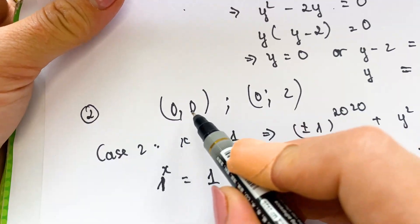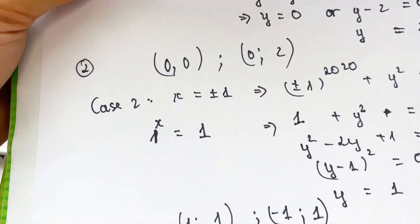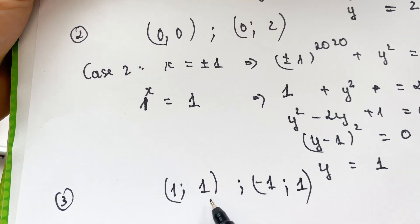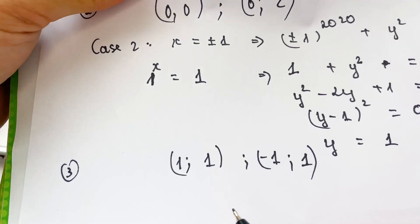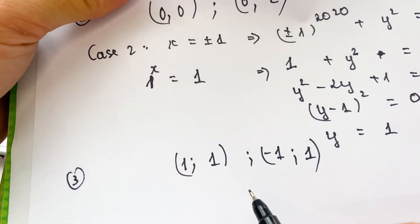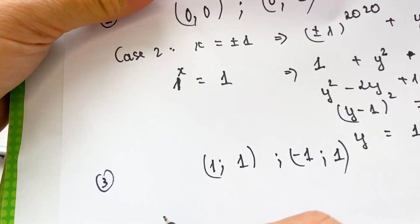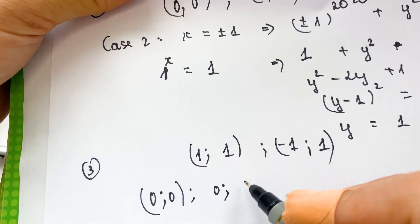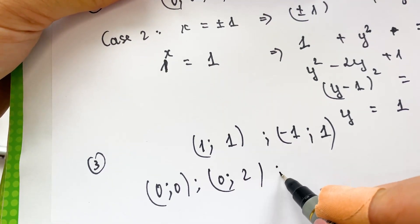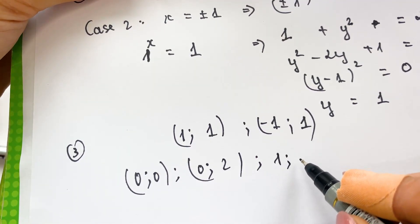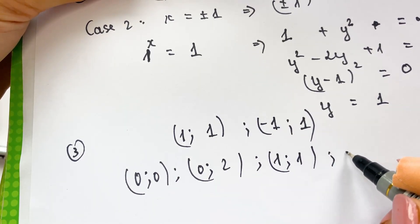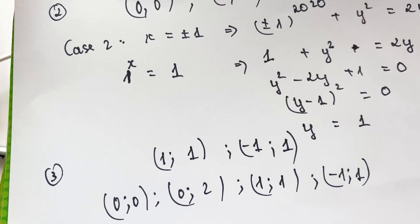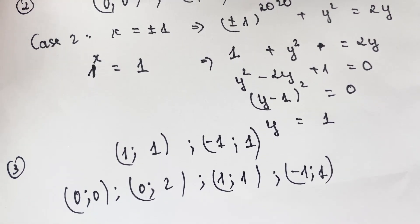So, looking back: we have two solutions for x equals 0, and two solutions for x equals plus or minus 1. Therefore the equation has exactly four solutions: (0, 0), (0, 2), (1, 1), and (minus 1, 1). Thank you for watching my video, don't forget to subscribe to my channel. Love you all, bye!